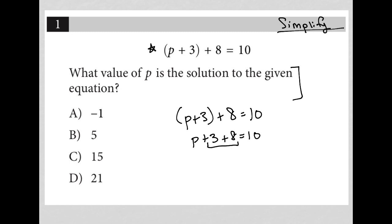Combining like terms, positive 3 plus 8 is 11, so this becomes p plus 11 equals 10.